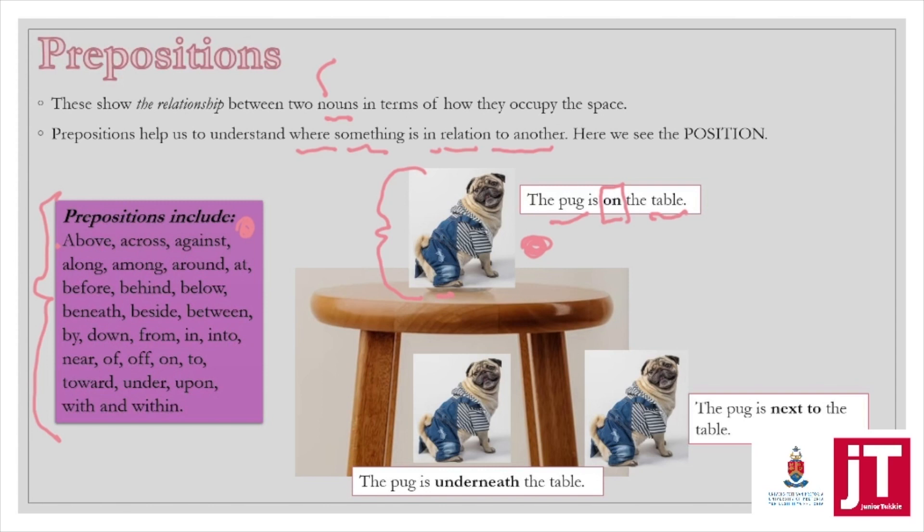I could say 'above the table,' but that implies that the pug isn't really sitting on the table — it's almost hovering above the table, which is a terrifying thought. Flying pugs! On is the most appropriate word. You could also say 'upon' — I place the pug upon the table. Let's move on to our next example.